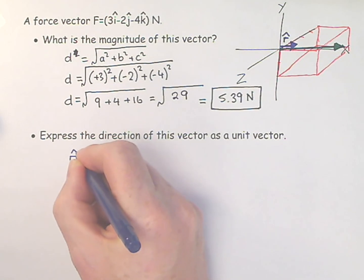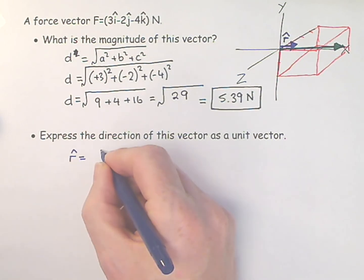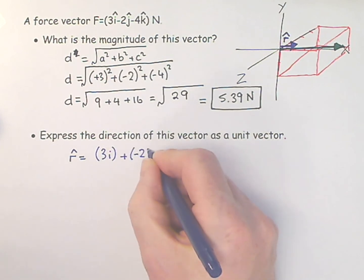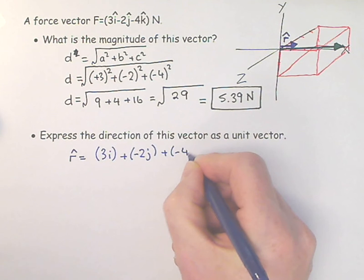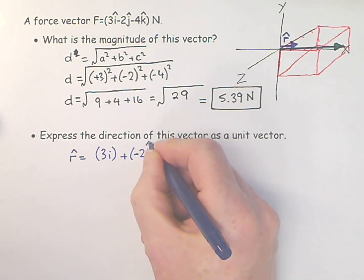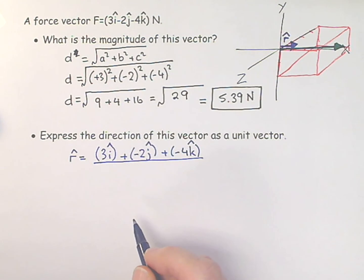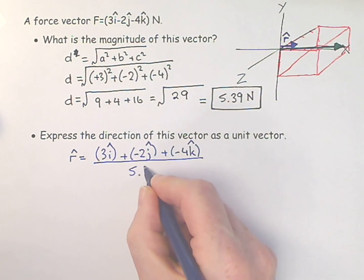So r hat is equal to 3i plus minus 2j plus minus 4k. And again, I'm just writing these things out, I've been a bit careful. That's the right direction, but the magnitude of that vector is wrong. And what is the correct magnitude? Divide this by its own magnitude. We've already worked that out. So that would be over 5.39.